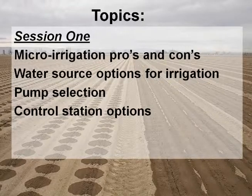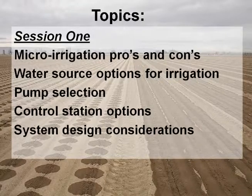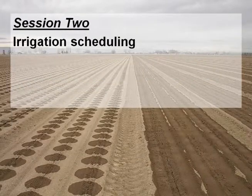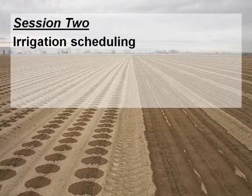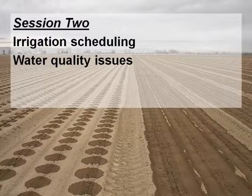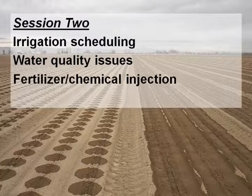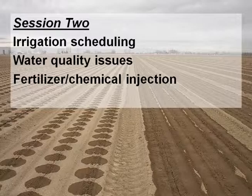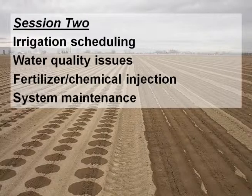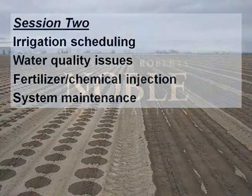That control station is usually right there by the pump. We'll also cover system design considerations, then we'll have a break. In session two, we'll talk about scheduling — when and how long to irrigate — water quality issues, and fertilizer and chemical injection. Some people call this chemigation; for fertilizer we call it fertigation, since chemigation refers to other things besides fertilizer. And then just a few words on system maintenance.